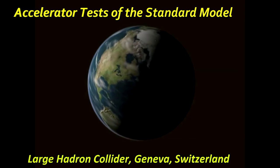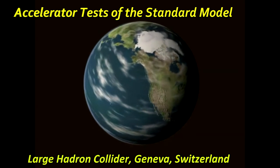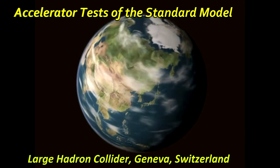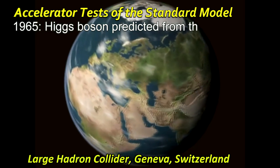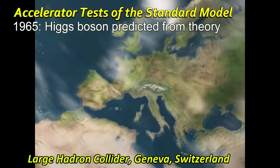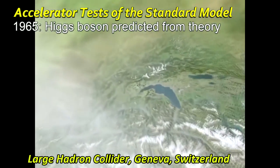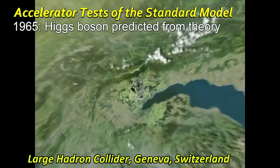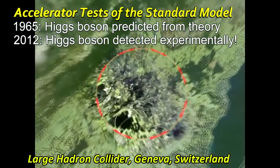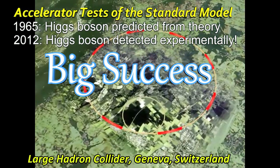Nowadays, physicists don't even test the model. They use it to predict the results of experiments. In fact, they trusted the model enough to build a $10 billion machine in Europe to measure the mass of a key quantum of the model, the Higgs boson. It was predicted in 1965 and was finally detected in 2012.